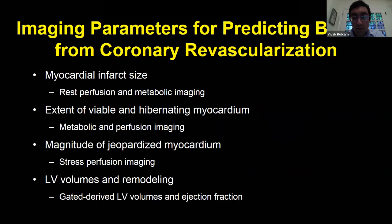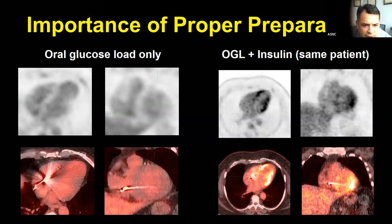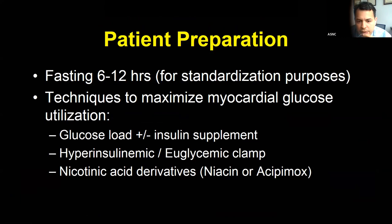A question from the chat: have any protocols been compared for optimal myocardial FDG uptake? Most studies show the hyperinsulinemic euglycemic clamp achieves the highest myocardial glucose uptake, but it's the most time-consuming. The differences may not be clinically significant, but some sites use the clamp for insulin-dependent diabetics or when the glucose load with insulin supplement doesn't yield good uptake.